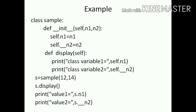Then print value 1 is equal to s.n1. That line is displayed. If we look at the outside class access, a different message will be displayed from outside the class. This is the function of the program and the output will be displayed on the screen.